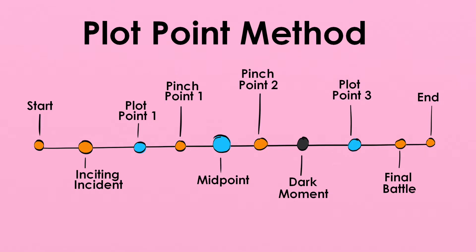The plot point method. For this method, imagine your story outline going in a straight line. From the beginning it should look like: start, inciting incident, plot point one, pinch point one, midpoint, pinch point two, dark moment, plot point three, the final battle, and the end. This method might work for your book and it might not — just do what works for you.